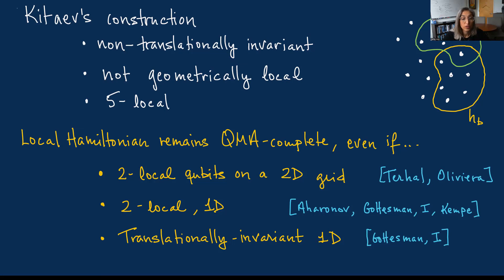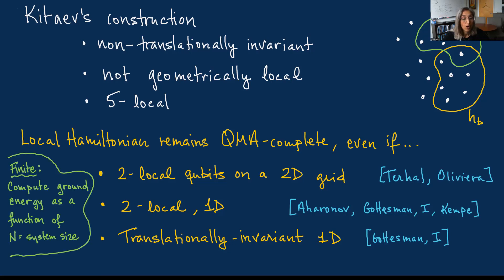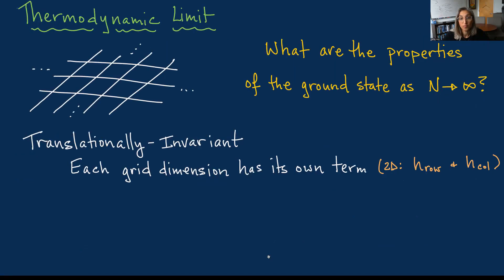We now know that local Hamiltonian remains QMA-complete even for two-local qubits on a 2D grid, two-local on a one-dimensional line, and even translationally invariant systems in one dimension. All of these results, however, still examine finite systems—asking about the complexity of computing the ground energy as a function of system size. In physics, the focus is typically on the thermodynamic limit: what are the properties of the ground state as the system size grows to infinity?